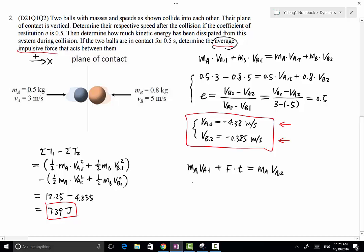Initially we have 0.5(3) + F(0.5) = 0.5(-4.38). From this equation we can solve for the force F to be -7.38 newtons.